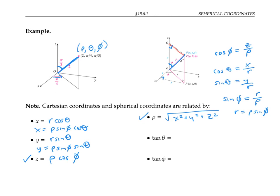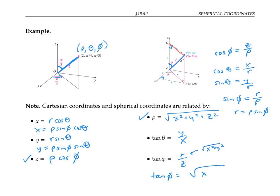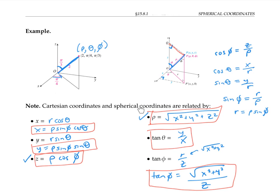Finally, we can relate theta and phi to x, y, and z. Tangent of theta is the opposite over the adjacent, so that's y over x. Also, tangent of phi is opposite over adjacent, so that's r over z. But r, the radius in polar coordinates, is just the square root of x squared plus y squared. So tangent of phi equals the square root of x squared plus y squared, over z. These six equations are handy for getting back and forth between Cartesian coordinates and spherical coordinates.